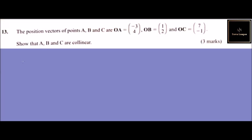Question number 13. The position vectors of points A, B, and C are OA equals minus 3, 4, OB equals 1, 2, and OC equals 7, minus 1. Show that A, B, C are collinear.